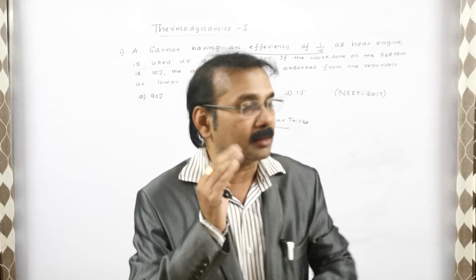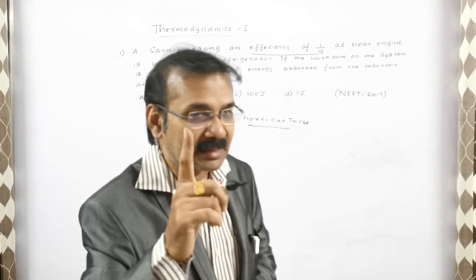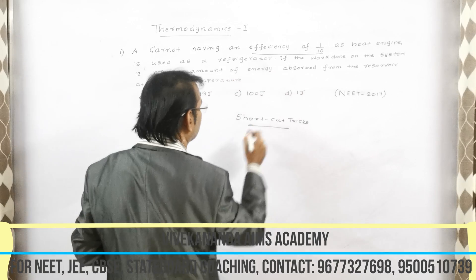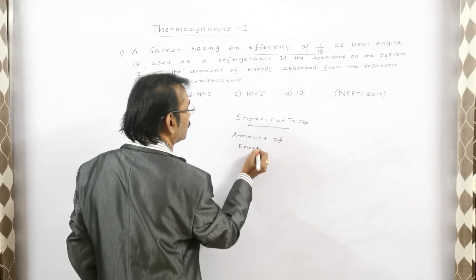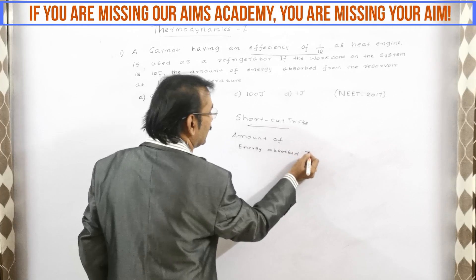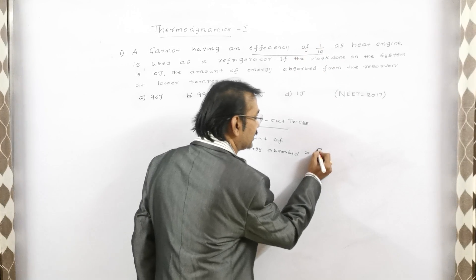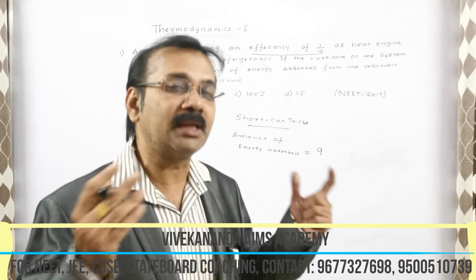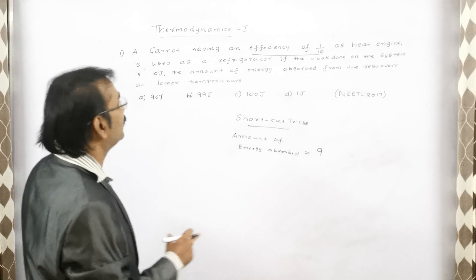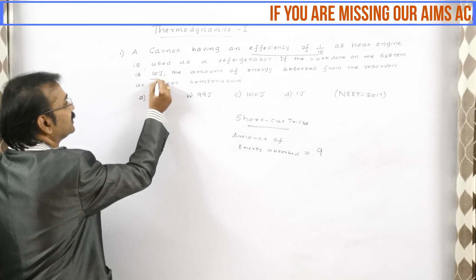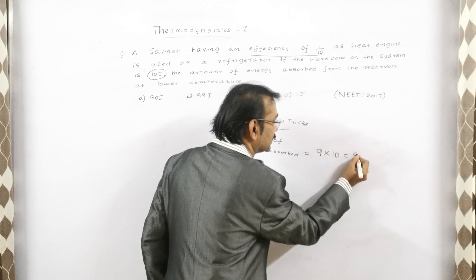What you are going to do is subtract the denominator and numerator: 10 minus 1 equals 9. The question asks for the amount of energy absorbed. Now, there is one more number — the work done on the system, which is 10. So simply multiply 9 by 10, and you will get 90 joules. Finished — we solved this question in a single step.